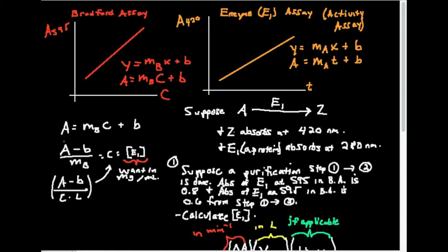So basically you need several things already created in order to do this. One of the things you need is your activity assays. If you're doing a purification table, obviously you're doing many steps of purification. You start with something that's crude, then you purify it — it becomes purer, and even purer than that. For every single step, you need to do an enzyme assay if you're purifying an enzyme, because part of how you quantify the purity or yield is by measuring its activity. In the previous video we went over how you calculate the activity per mL of an enzyme, and we're not going to go through a lot of the derivation here again, but you can watch that video to see how it was derived.